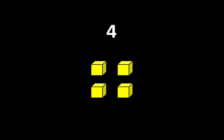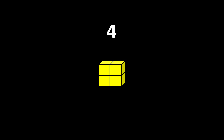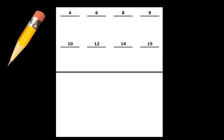Let's begin with the number 4. We can think of 4 as 1 group of 4 or 4 groups of 1. We can also think of it as 2 groups of 2. On your paper, write that we can think of 4 as 1 group of 4 or 4 groups of 1, and we can also think of it as 2 groups of 2. Pause the video if you would like more time.